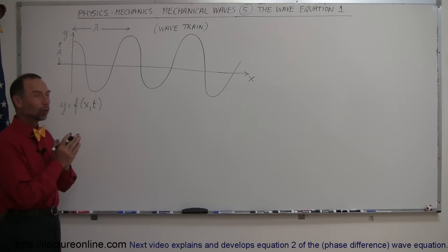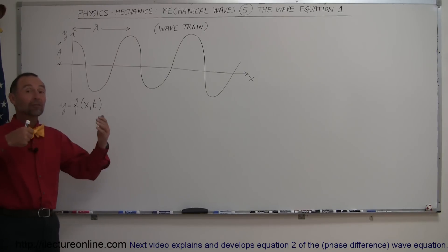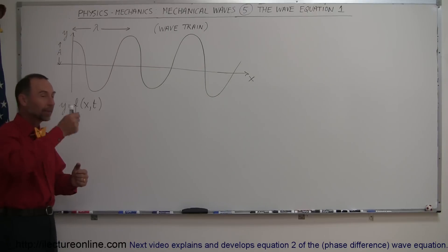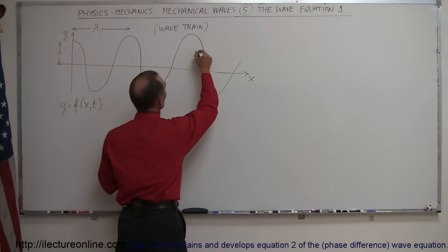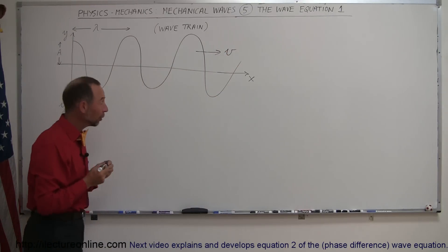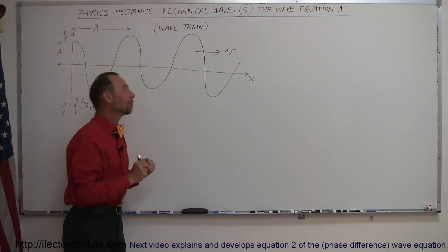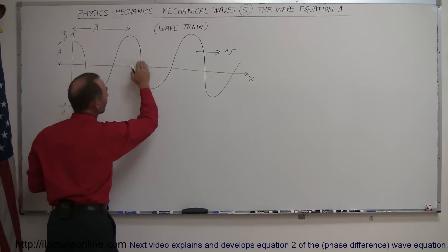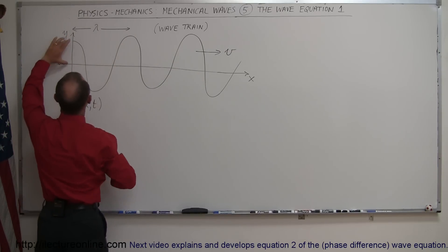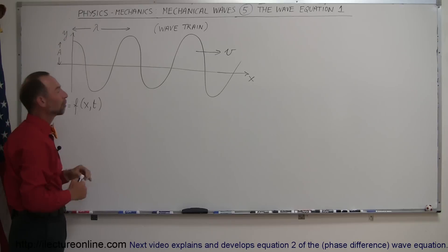In the next few videos, starting with this one, we're going to take a closer look at the wave equation. There are different forms of the wave equation. Here we're going to look at the wave equation of what we call a wave train. Let's say we have a string and on one end we're continuously moving it up and down, continually pouring energy into the string. That energy will displace itself along the string, causing a wave to move to the right with velocity v. The string particles move up and down — not to the right — it's just the energy of the wave that moves to the right. The wave is defined by the wavelength, and the greatest distance from the central equilibrium point to the highest displacement is called the amplitude of the wave.